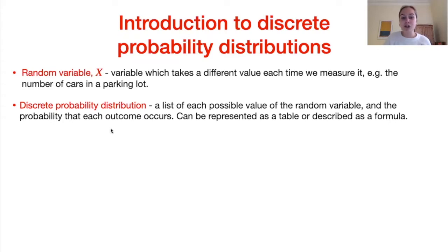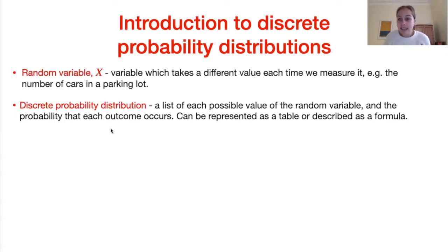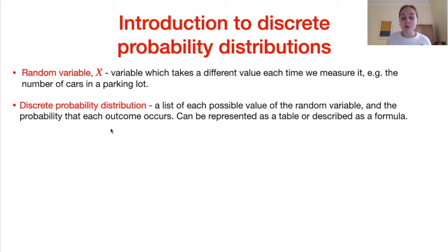A discrete probability distribution is a list of each possible value that the random variable can take and the probability that each outcome occurs. We can represent this as a table or describe it as a formula. For example, if we're talking about cars in a parking lot with capacity 200, the random variable could take all integer values from 0 to 200, and the distribution tells us the probability of each count.